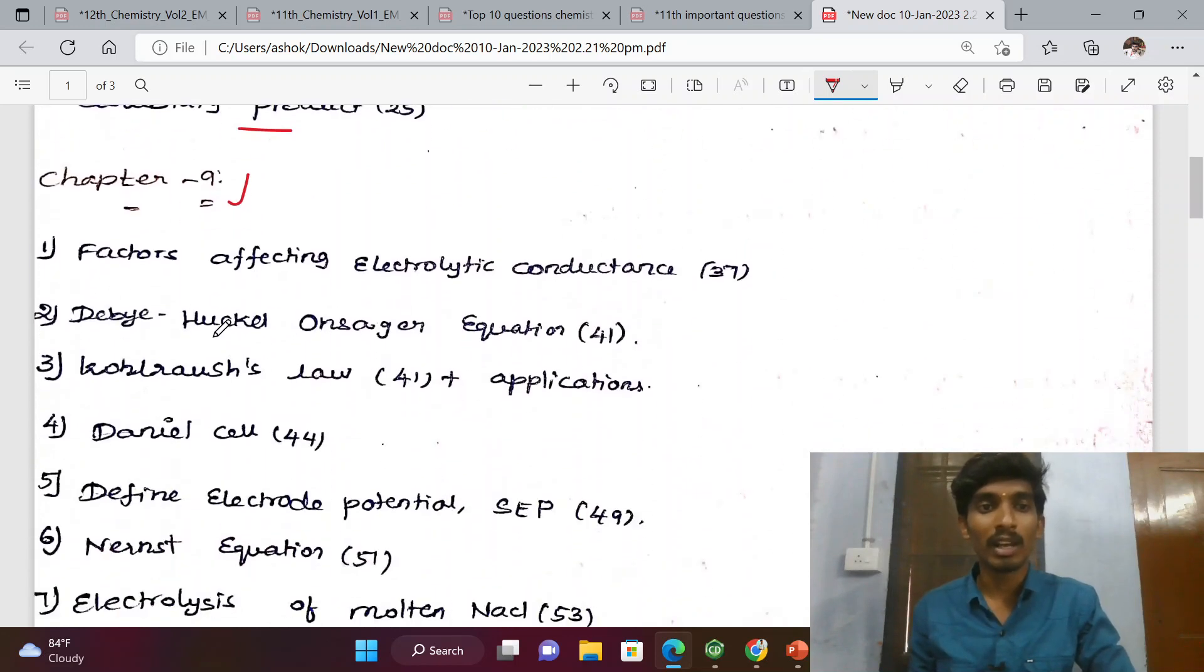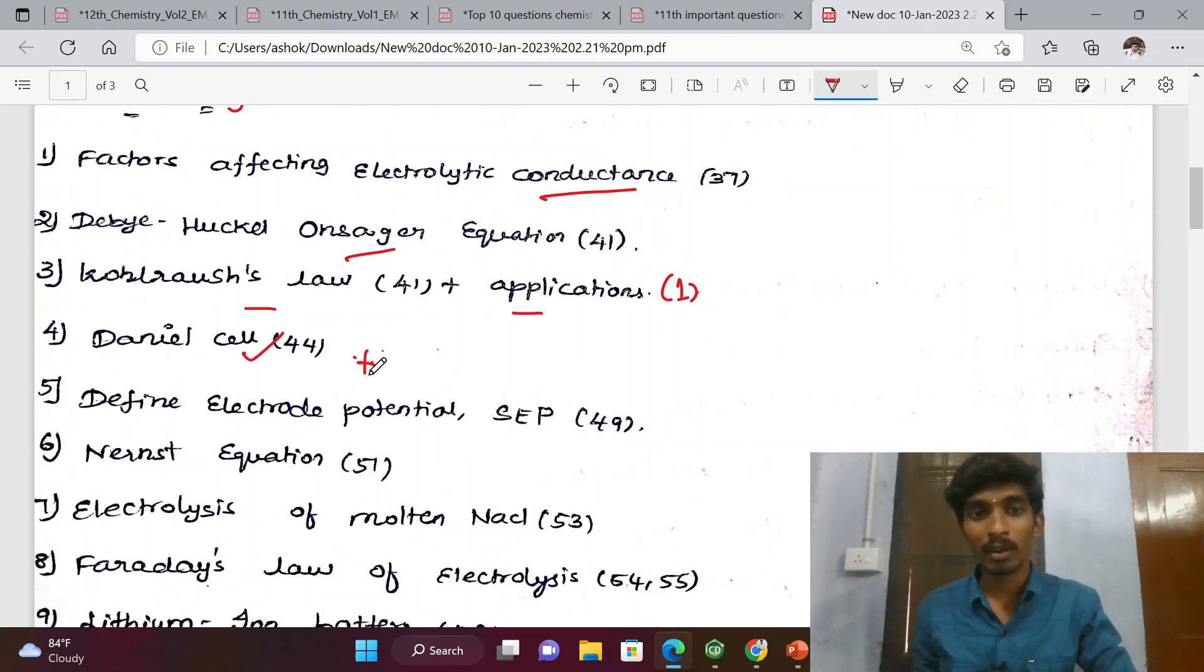Chapter 9, Electrochemistry: Factors affecting electrolytic conductance, Debye-Hückel-Onsager equation, Kohlrausch's law and its application (very important, Kohlrausch's law application), Daniell cell (very important, 5 mark question).